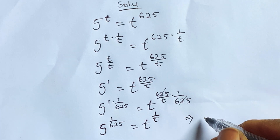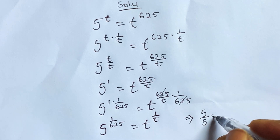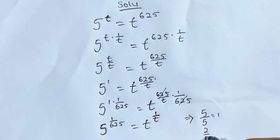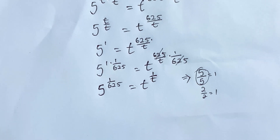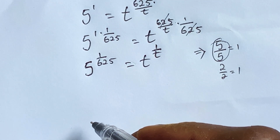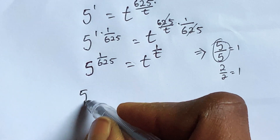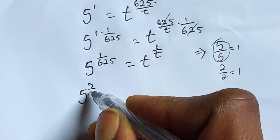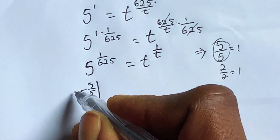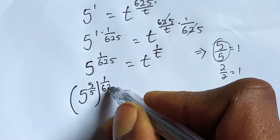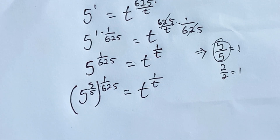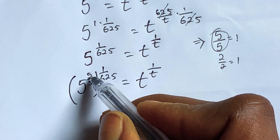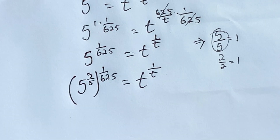We know that 5 over 5 equals 1, and 2 over 2 equals 1. So we'll use 5 over 5. We rewrite the exponent using 5 over 5, giving us 5 to the power of 5 over 5, which equals 1, placed in a bracket and then multiplied by 1 over 6/5, equal to t to the 1 over t. This allows us to split the exponent — this multiplies this, and this multiplies this.